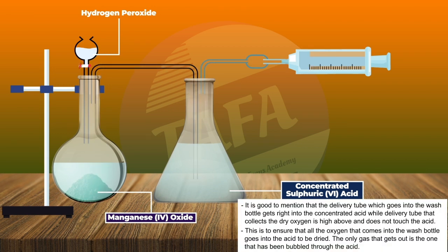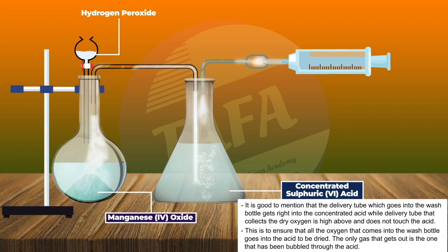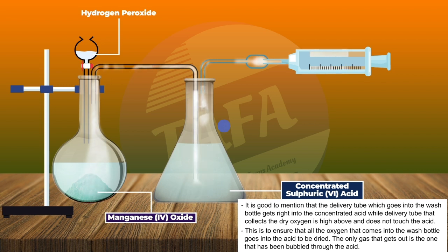It is important to note that the delivery tube which goes into the wash bottle extends right into the concentrated acid, while the delivery tube that collects the dry oxygen gas is positioned high above and does not touch the acid. This ensures that all the oxygen entering the wash bottle is bubbled through the acid to be dried, and only the gas that has been bubbled through the acid gets out.